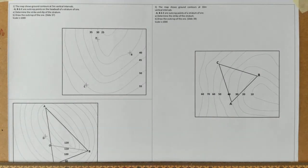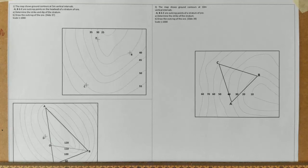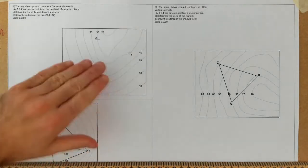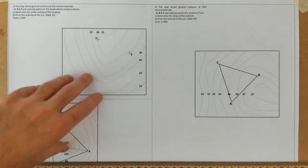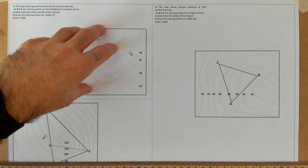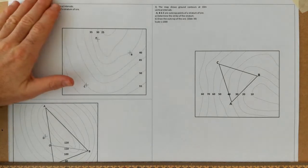Good afternoon folks. In this video we're going to be doing some questions that we have previously done in another video, looking at outcrop points, learning how to do the dip, the strike and the thickness of a stratum of ore, and in some points we're actually going to be drawing the actual outcrop of where all that ore comes to the surface. I'll go through this video a little bit quicker with a little bit less explanation because we have done a lot of this stuff already, but when I get to the outcrop points at the end I'll go through that in more detail. Three questions in this video.